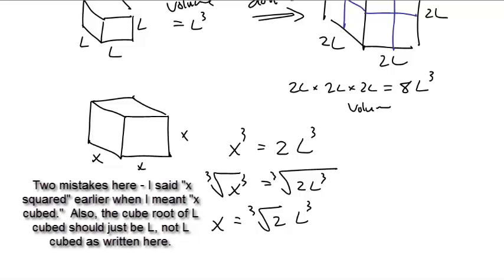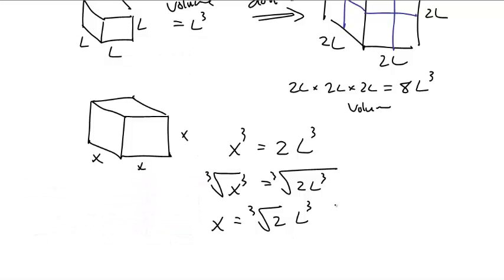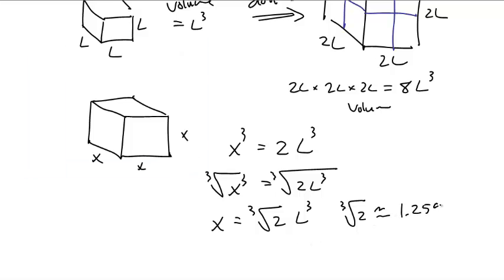So they're not supposed to double each side. What is the cube root of 2? Cube root of 2 is approximately 1.2599, 1.2599. That's how many times bigger it is. It's not twice as big, but a little bit more than 25% bigger. A little bit more than a quarter bigger.